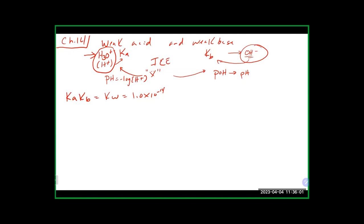We also talked about percent ionization. Percent ionization is the concentration of H+ divided by the concentration of the initial acid, times 100. This is basically how we check our assumptions when we make the x≈0 assumption. You can also use it for bases based on how much hydroxide comes off versus how much H+ comes off.